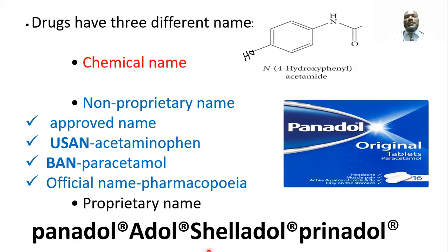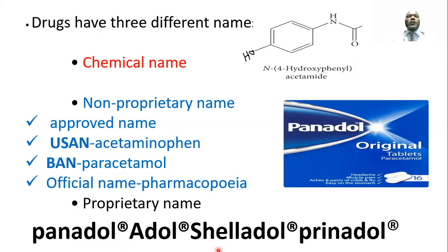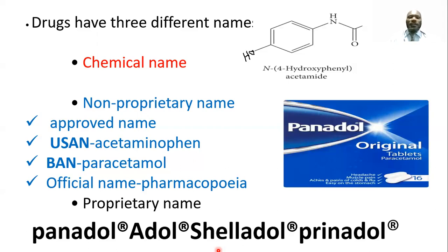Paracetamol has different brand names, for example: Panadol, Adol, Shelladol, and Prinadol. The same drug is manufactured by different companies under different names — these are proprietary or trade names. In terms of cost, proprietary or trade names are more expensive compared to generic names.